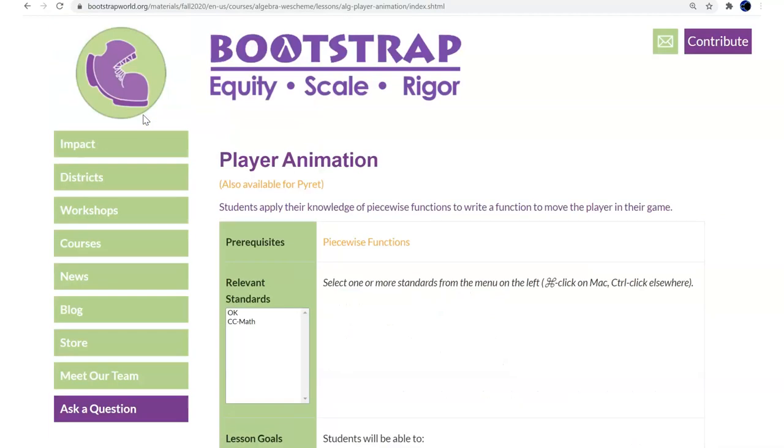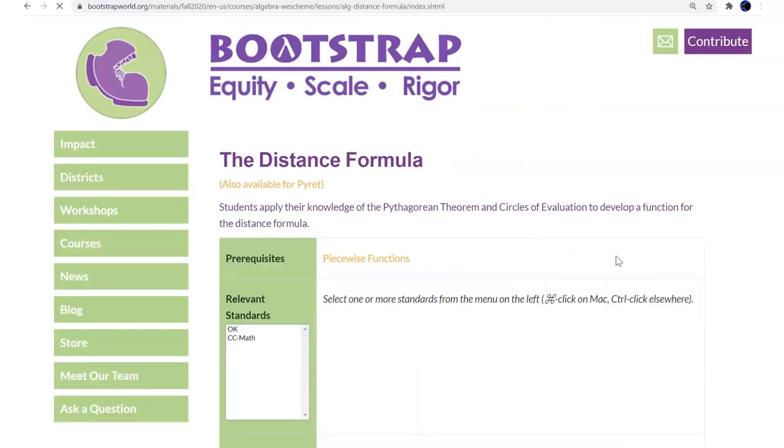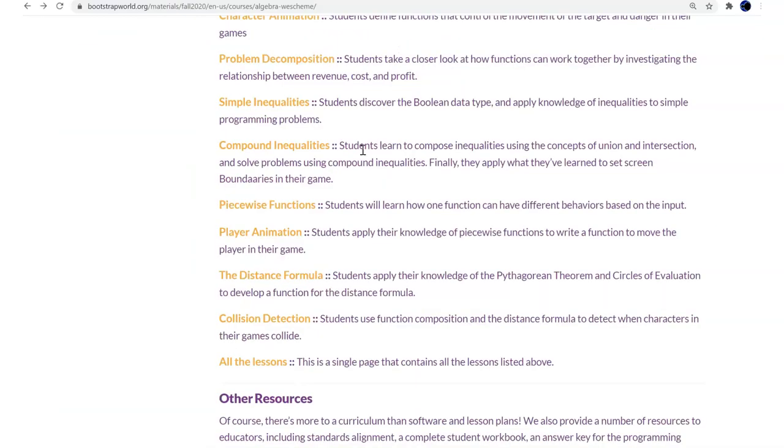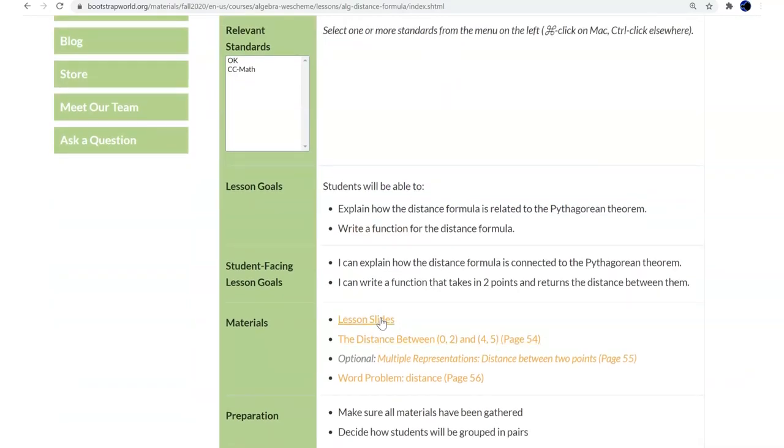And then changed update player in the students game. So now we're going to talk about the distance formula. Let's go back just a second and to be able to look at collision detection. So there's two lessons left, let's get the signs up.